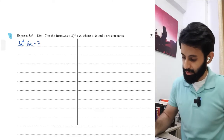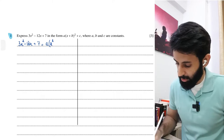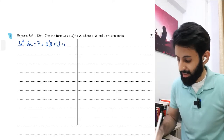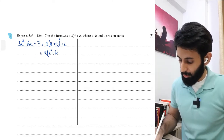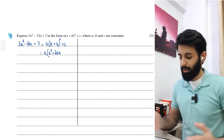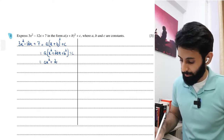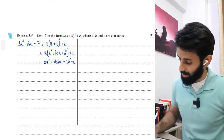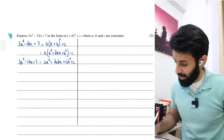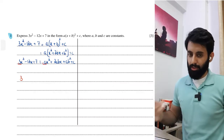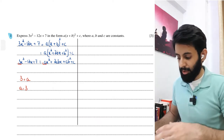Expanding a(x + b)² + c gives ax² + 2abx + ab² + c. Comparing with 3x² - 12x + 7: the coefficient of x² gives a = 3. For x: 2ab = -12, substituting a = 3 gives 6b = -12, so b = -2. For constants: ab² + c = 7, meaning 3(-2)² + c = 7, so 12 + c = 7, giving c = -5.